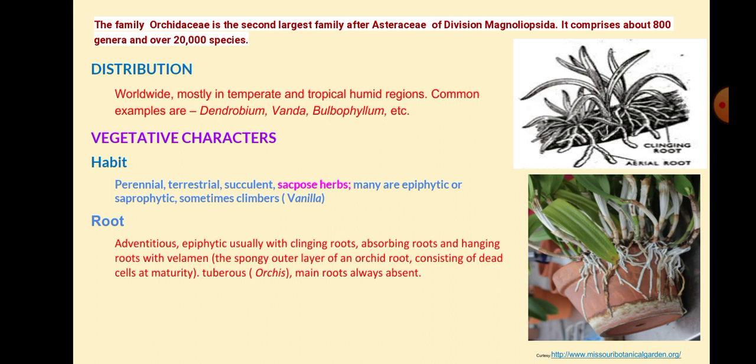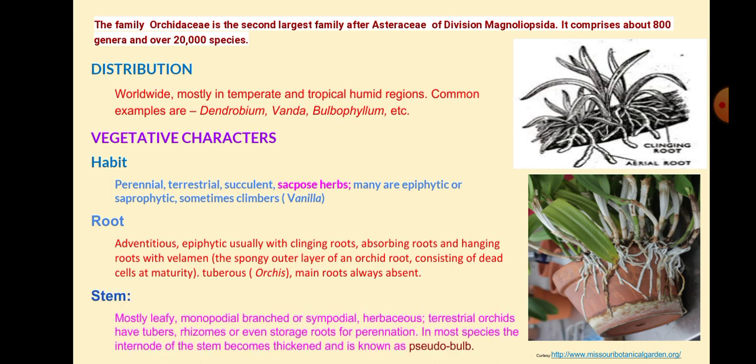Roots have a velamen — a spongy outer layer of the orchid root consisting of dead cells at maturity. In various orchids, main roots are always absent. Stem: Mostly leafy, monopodial or sympodial. Terrestrial orchids have stout rhizomes or storage roots for perennation. In most species the internode of the stem becomes thickened and is known as pseudobulb.